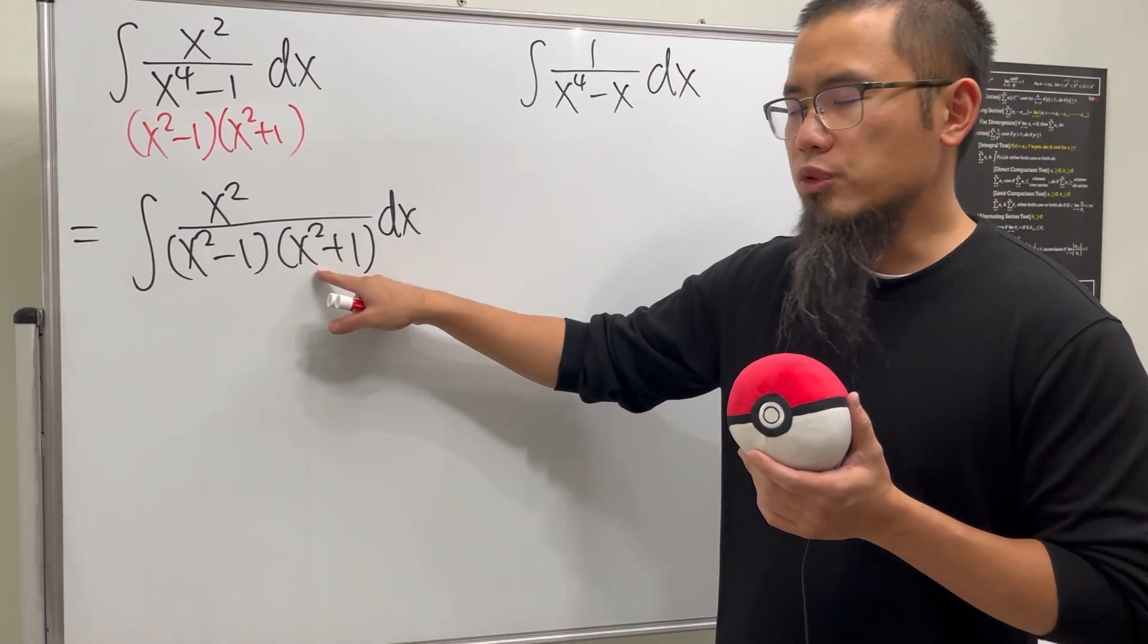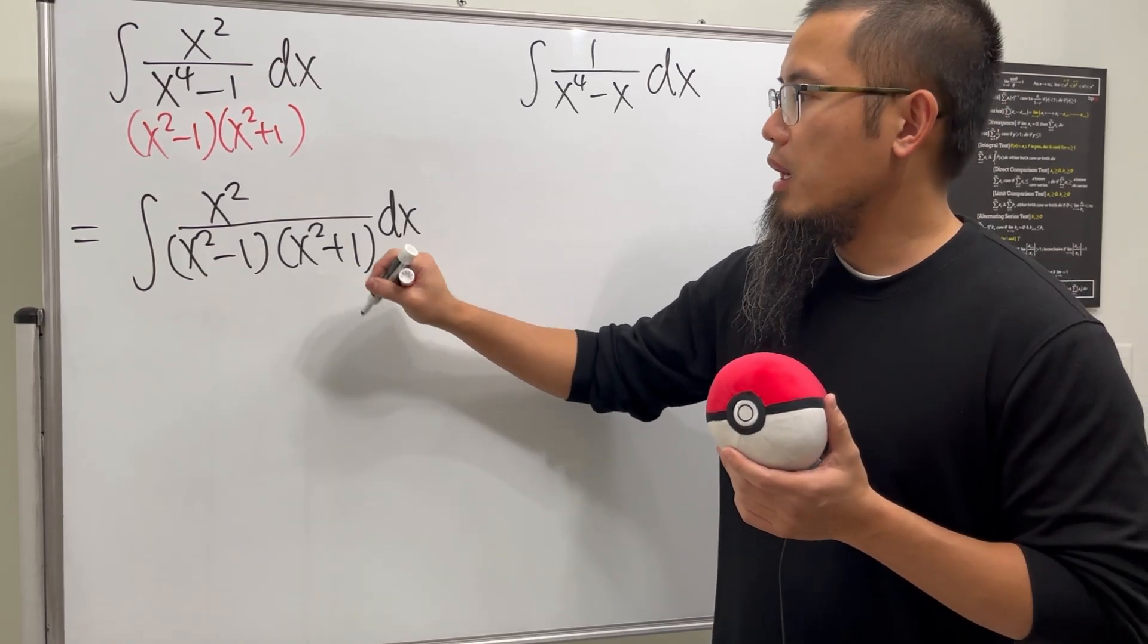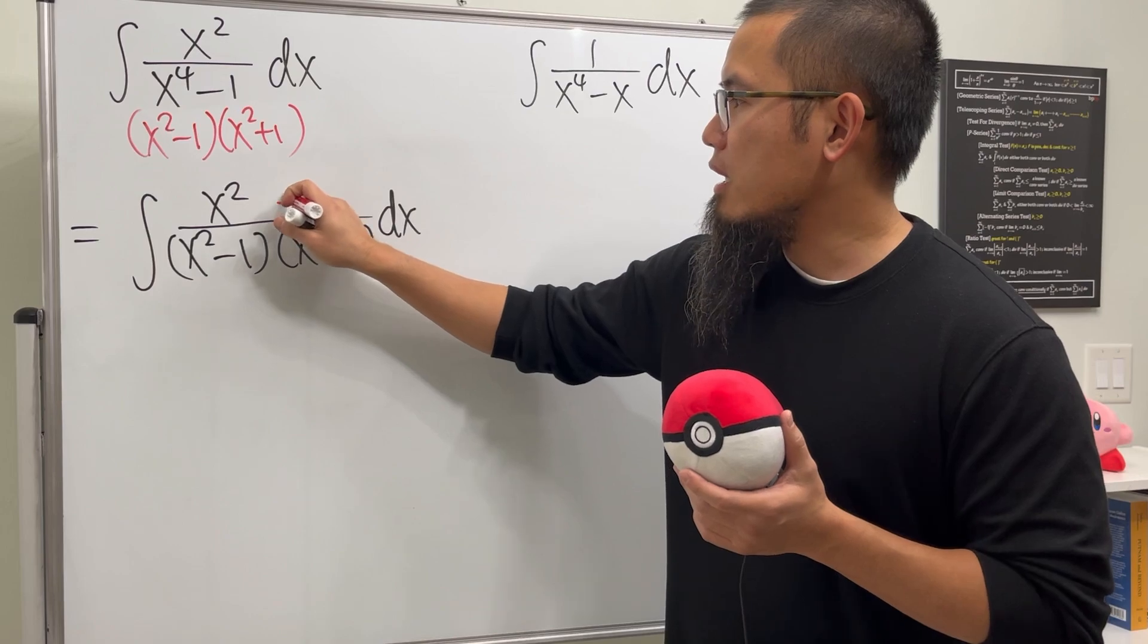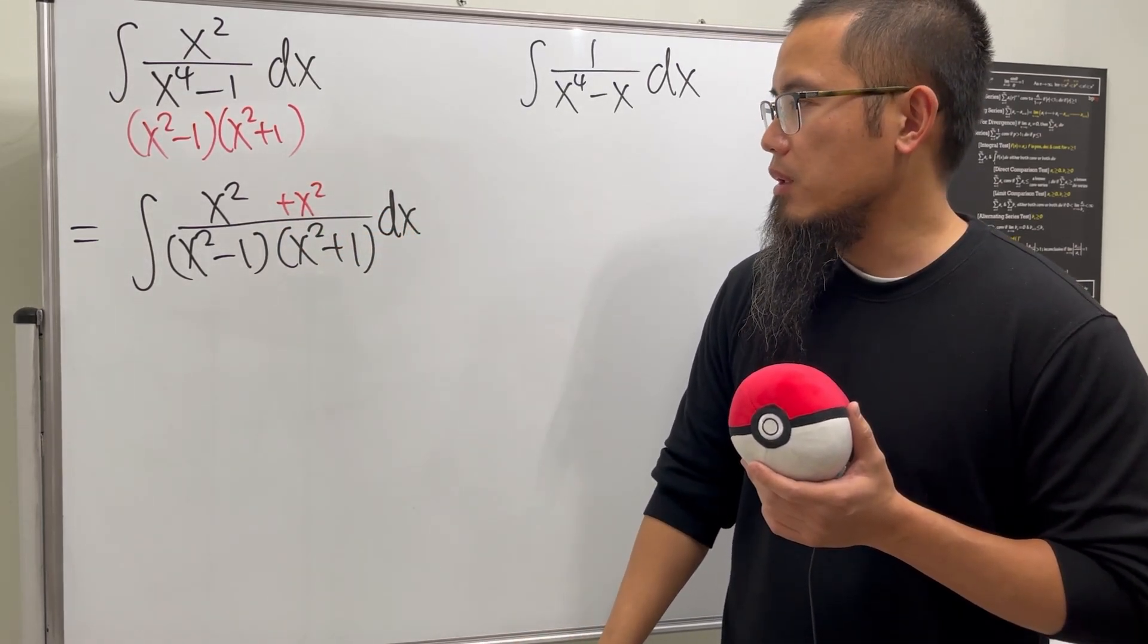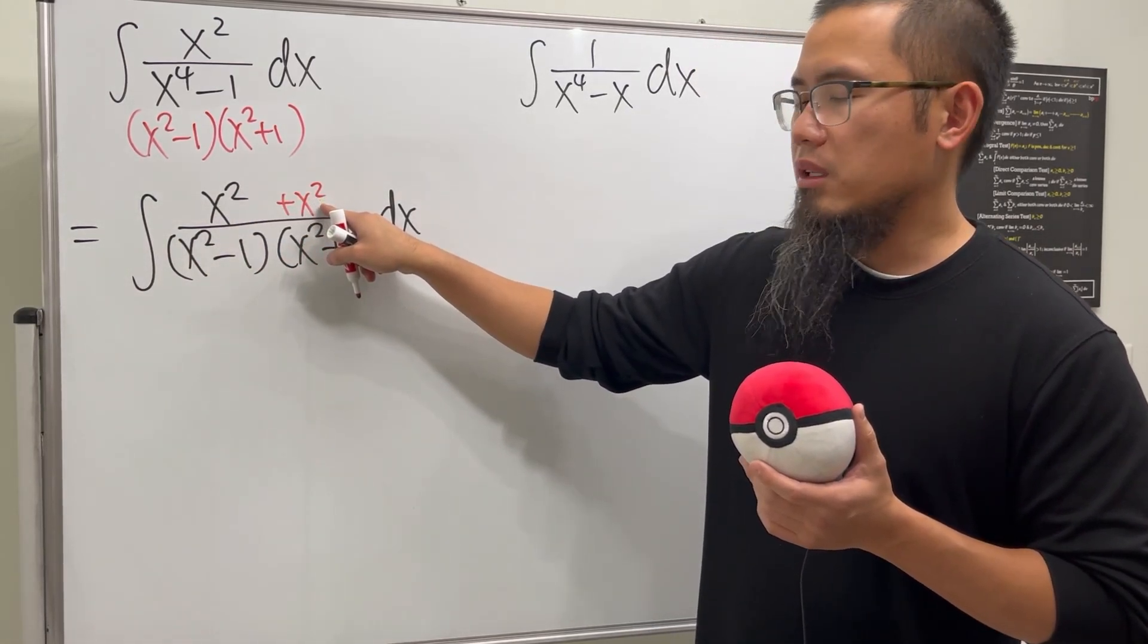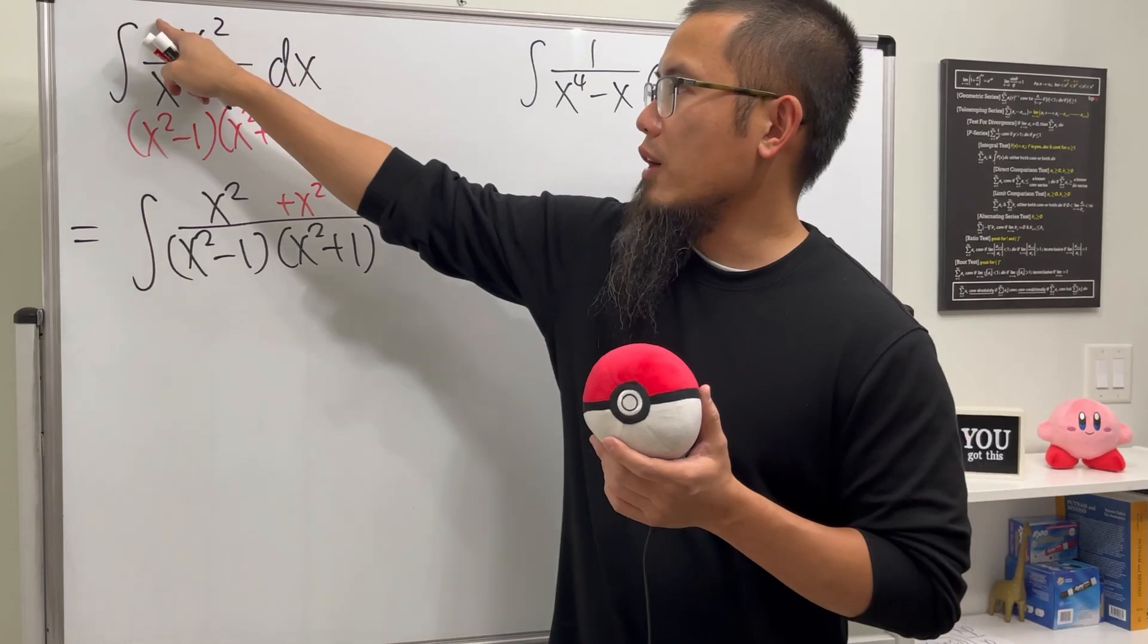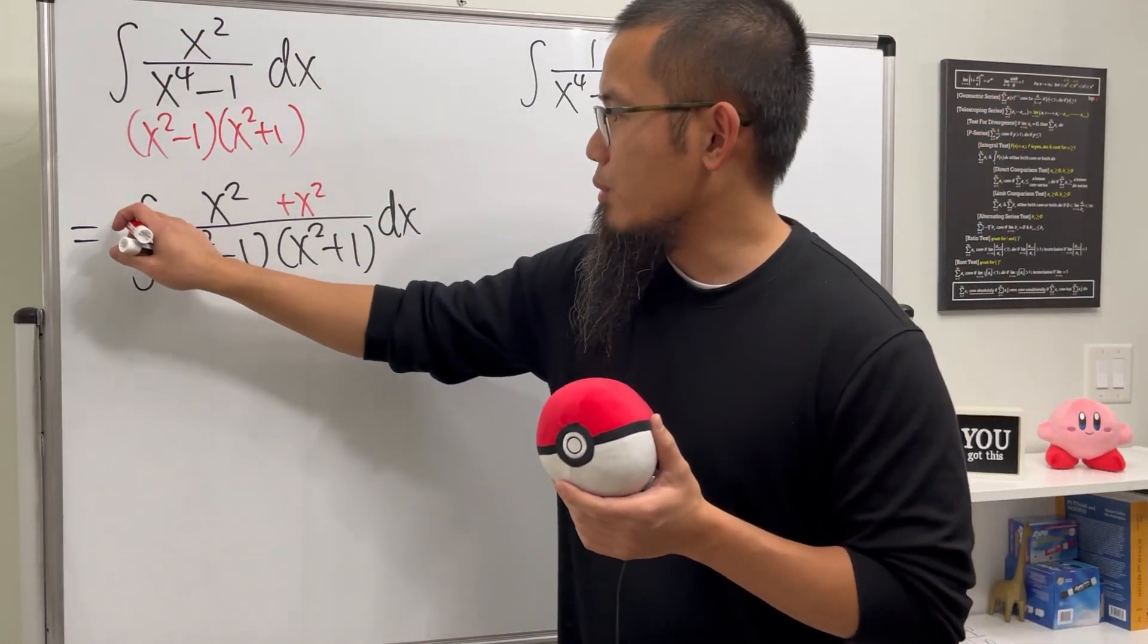But you see, here, we also have the x² + 1. This is what we are going to do. Let me go ahead and add another x², because I would like to do some cancellations right here as well. But this way, 1x² + 1x² is 2x². Originally, you won't have 1. Don't worry.